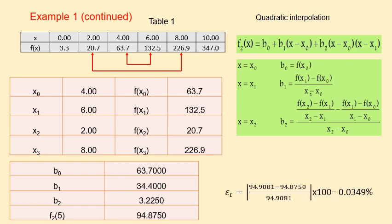The true error is 0.0349%, which is much lower compared to 3% that we got from the linear interpolation.